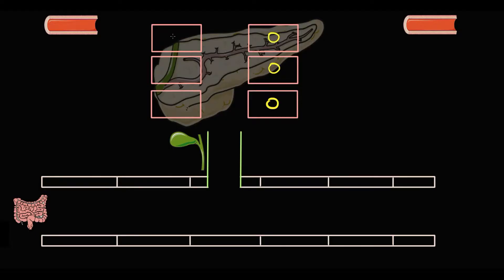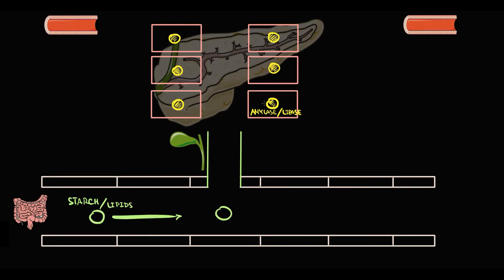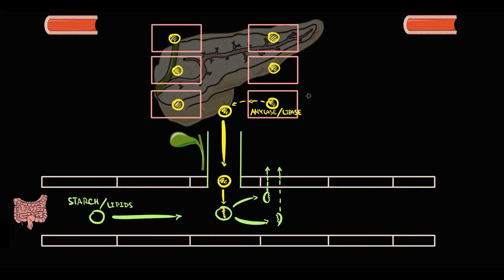Amylase and lipase are pancreatic enzymes located inside the acinar cells of pancreatic tissue, stored in the form of vesicles. When starches and lipids enter the duodenum, acinar cells transport vesicles to the cell membrane and release amylase and lipase into the pancreatic duct, delivering them to the duodenum for digestion. In normal cellular turnover, old acinar cells die, their membrane integrity becomes disrupted, and their contents — including lipase and amylase — are released into the blood.